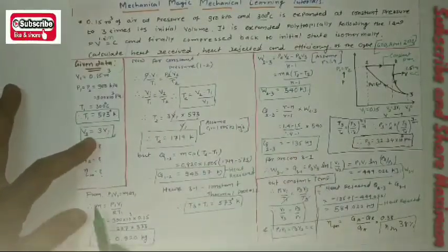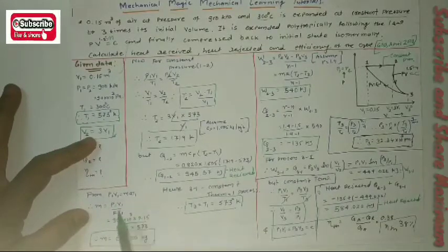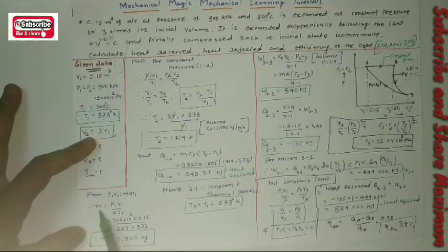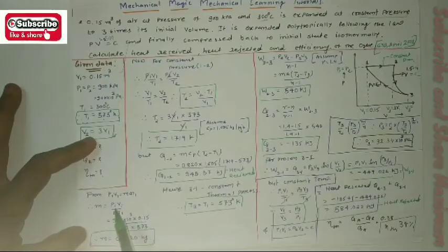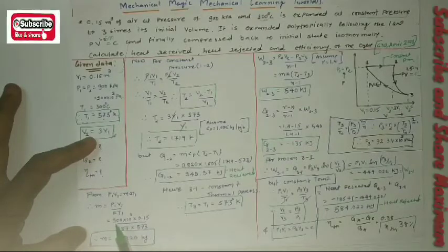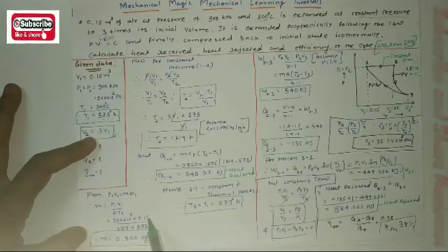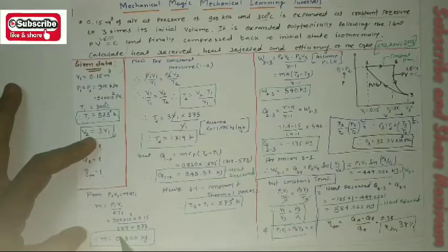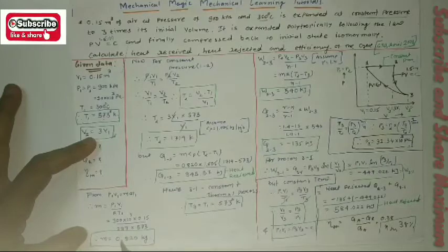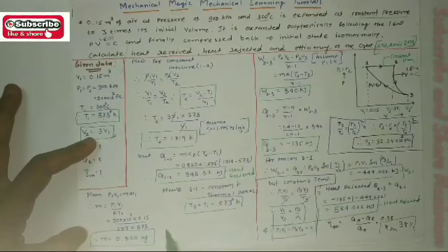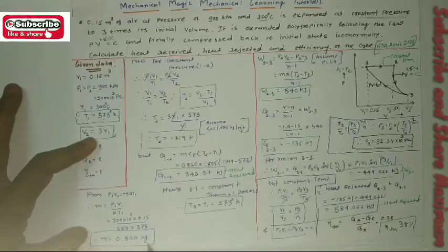Starting the solution using the ideal gas relation P1V1 = mRT1, we get m = P1V1 / (R × T1). Substituting P1 = 900 × 10³, V1 = 0.15, R = 287 J/(kg·K), and T1 = 573 K, the mass m = 0.826 kg.